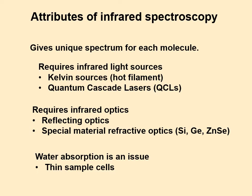To summarize infrared spectroscopy: it gives a unique spectrum for each molecule, which is fantastic. It requires different kinds of light sources because this is all in the mid-infrared. You can use a Kelvin source — a red-hot glowing filament, not very expensive but not very bright — or a quantum cascade laser, which is expensive but provides higher intensity tunable light.